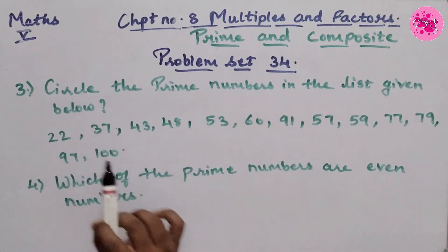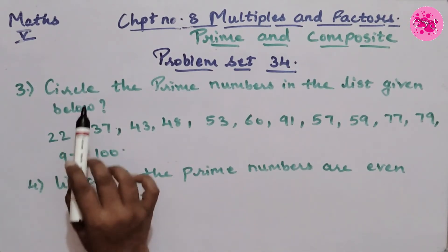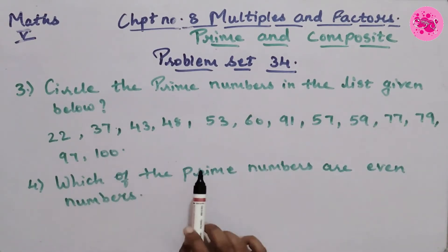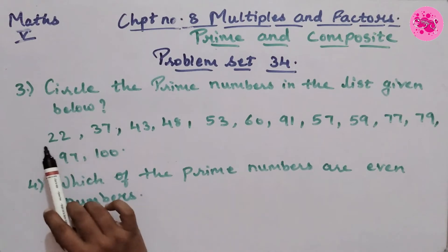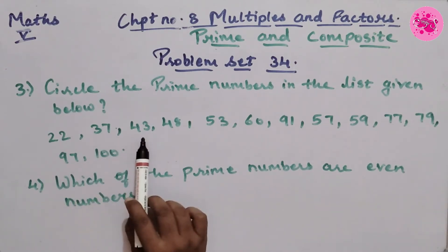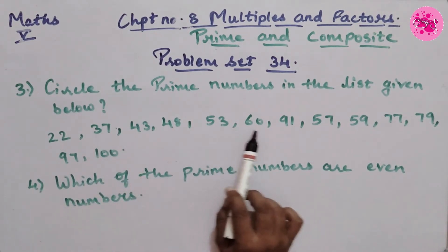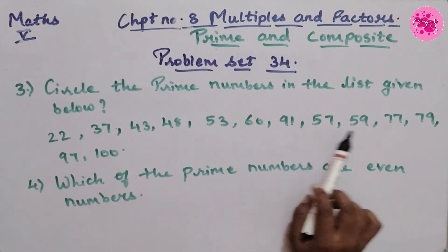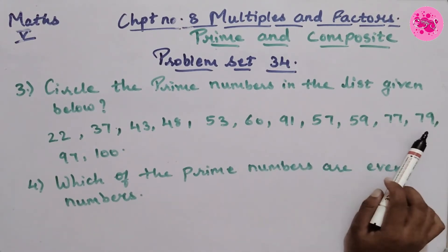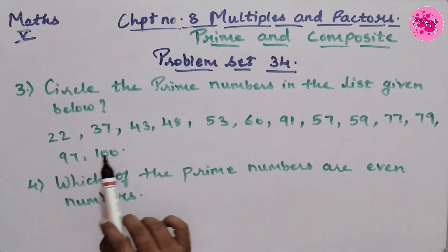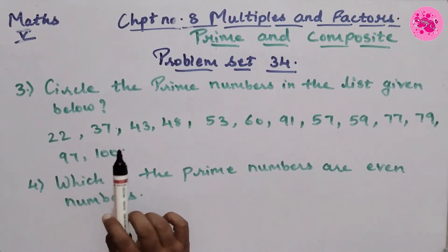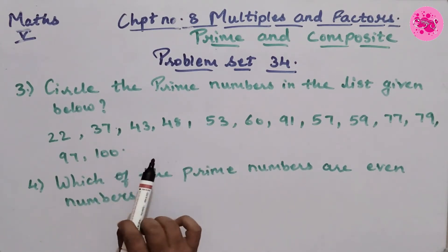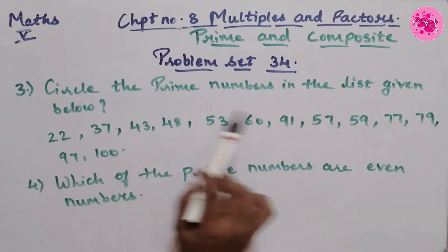Now let's move to question number 3: Circle the prime numbers in the list given below. The numbers given are 22, 37, 43, 48, 53, 60, 91, 57, 59, 77, 79, 97, and 100. In this question we have to circle the prime numbers from the list.